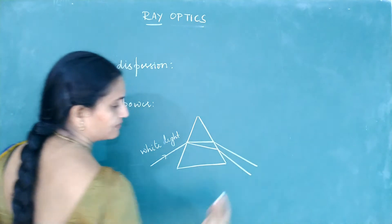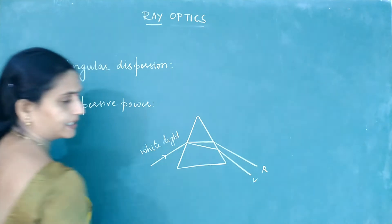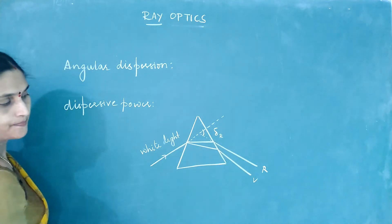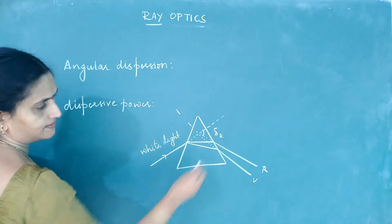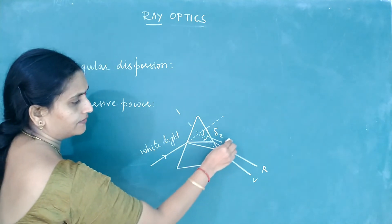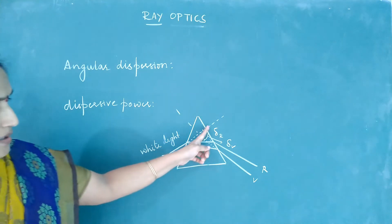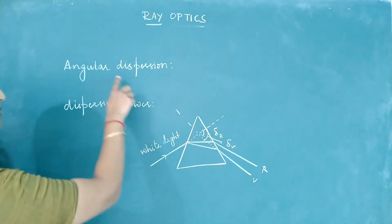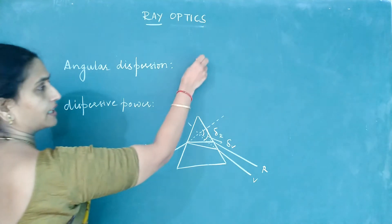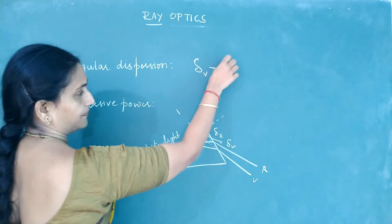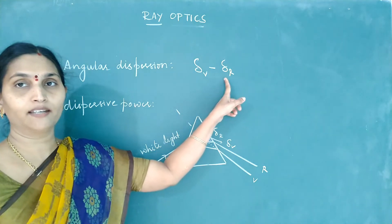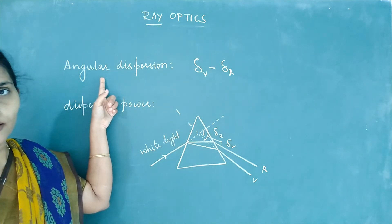Violet bends the most, red will bend the least. I am showing only two colours: violet and red. If I extend the incident ray and extend the red colour backward, this angle is the deviation produced by red. Extending violet also in the opposite direction, this angle gives the deviation produced by violet. Violet is deviating more, red has less angular deviation. The difference between these two is called angular dispersion, defined as delta V minus delta R — deviation produced by violet minus deviation produced by red.